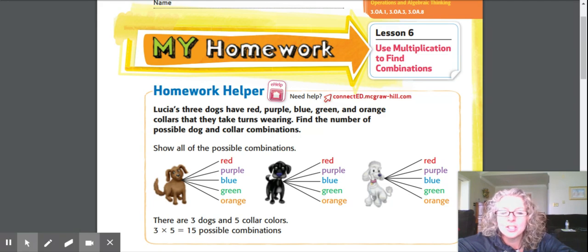Lucia's three dogs have red, purple, blue, green, and orange collars that they take turns wearing. Find the number of possible dog and collar combinations. So first thing you'll notice is I go ahead and I make the dog.